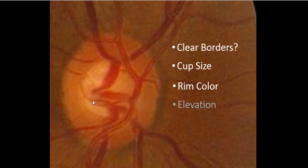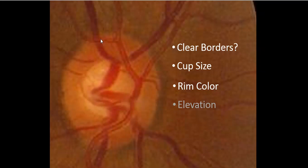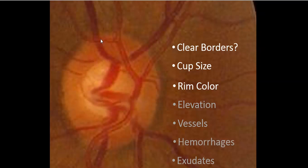For the medical student looking at a picture like this, we really can't address elevation directly. We can make some presumptions based upon the way the vessels are moving over the optic nerve — for example, a vessel that arcs here gives the impression that the rim is raised. For the ophthalmologist looking through a slit lamp or an indirect, we actually have a three-dimensional view where we can truly see the optic nerve's degree of elevation. We also look at the vessels themselves for clues, and we look for features that shouldn't be present in a normal situation, such as hemorrhages and various forms of exudates.